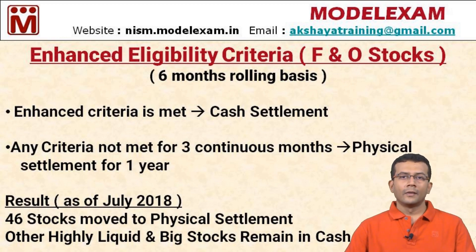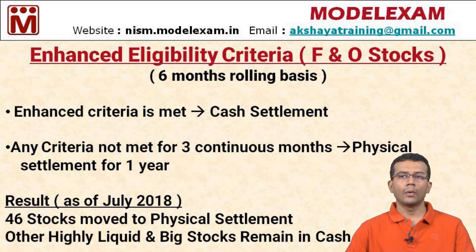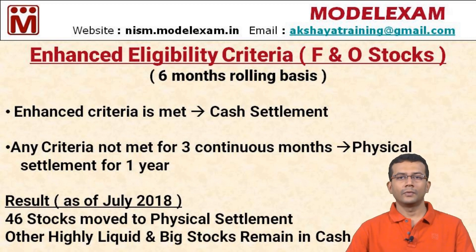In physical settlement, all outstanding positions on the expiry day are compulsorily settled in physical format — the shares have to be delivered to DEMAT accounts. If you are a buyer in futures, you must compulsorily buy the shares; if you are a seller in futures, you must compulsorily give delivery of shares. As of July 2018, 46 stocks are being moved to physical settlement, while highly liquid and large stocks like Infosys and Reliance Industries will remain in the cash settlement system.